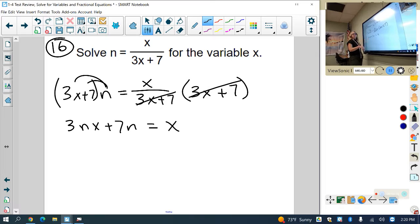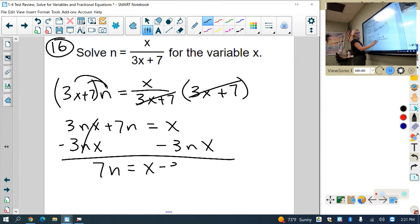Now I have an x on both sides, so I'm going to subtract 3nx from both sides, and I'm left with 7n equals x minus 3nx.